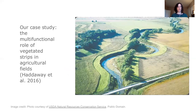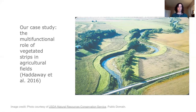Within the current work, we're seeking to demonstrate the added value of network analysis for evidence and gap maps, using open source tools and methods that can be applied widely across various disciplines and domains. We'll be using a previously published evidence and gap map on the role of vegetated strips in agricultural fields.